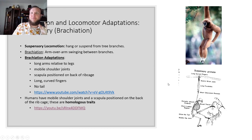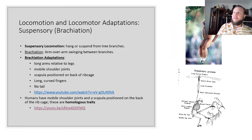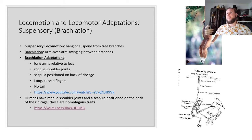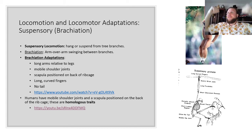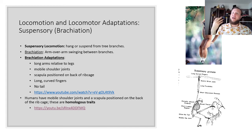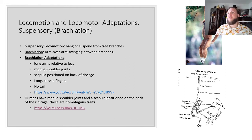The next form is brachiation and suspensory locomotion, shown by the gibbon. The hinders suspend from tree branches arm over arm — brachiation is arm-over-arm swinging through the trees. Adaptations include long arms relative to legs and mobile shoulder joints — that's why we can rotate our shoulders, because we used to be brachiators. The scapula is positioned on the back of the rib cage, and they have long curved fingers and no tail. We share these as homologous traits, showing one of our more recent ancestors was a brachiator.